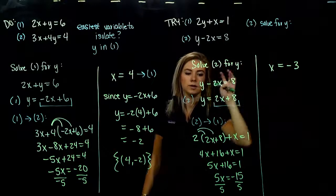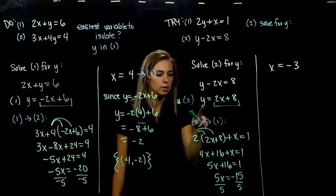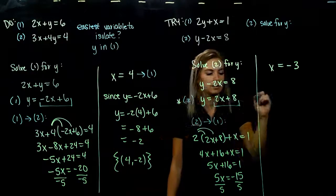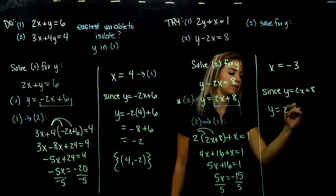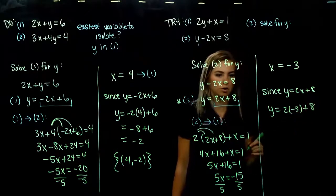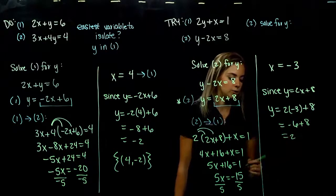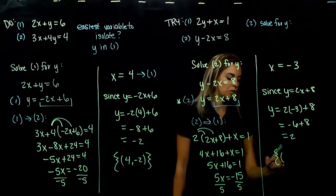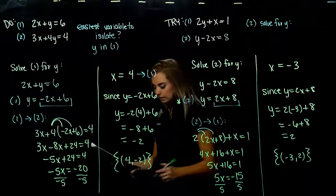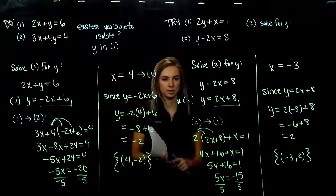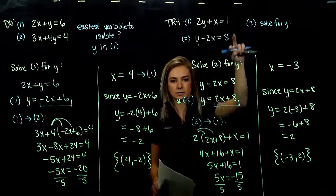We're only halfway there — we have x and need y. The easiest thing to plug back into is our new equation 2 where y is already isolated. Since y equals 2x plus 8, substituting x equals negative 3: 2 times negative 3 gives negative 6, plus 8 gives 2. Our solution set contains one point: (−3, 2). This is a consistent, independent system — we have a solution and the lines are not the same.